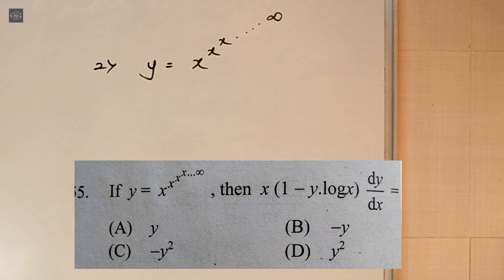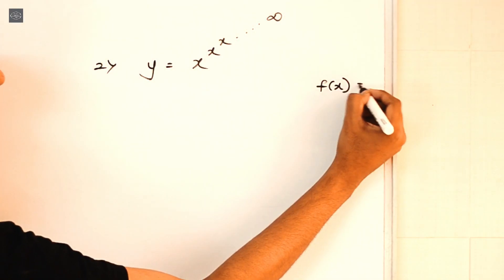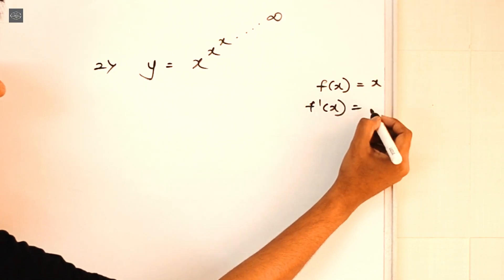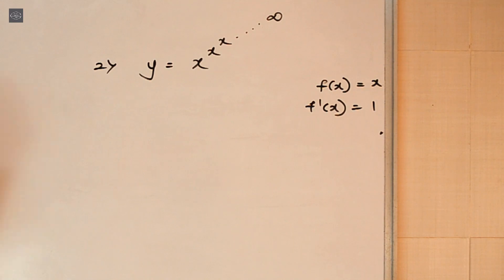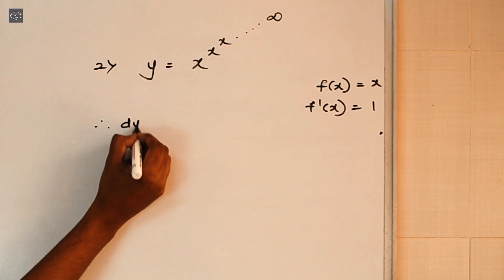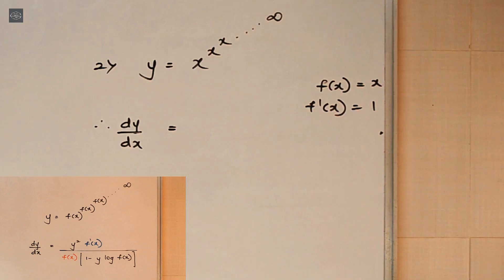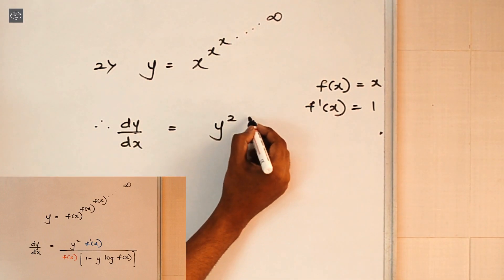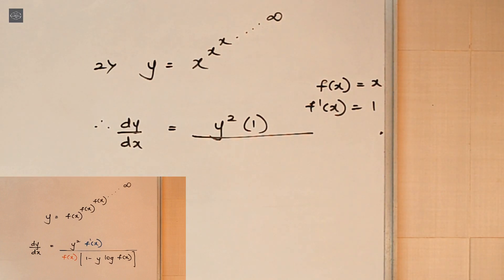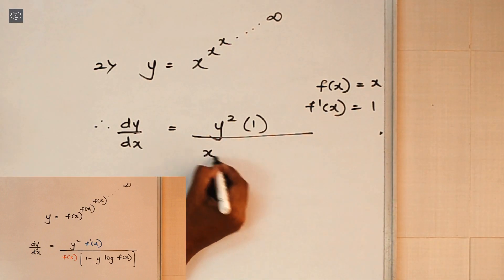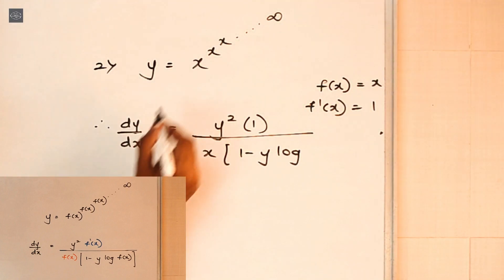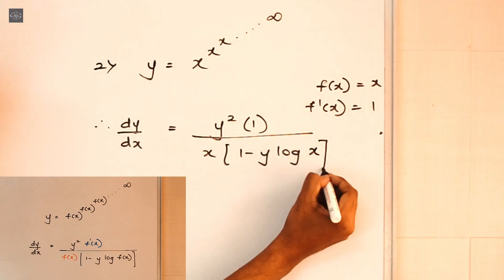Now on the similar line, let's solve the next one. Here the function f(x) is nothing but x, so f'(x) — the derivative of x — is 1. Now applying the shortcut trick: dy/dx equals y squared times f'(x), which is 1, upon the denominator f(x) which is x, times (1 minus y·log f(x)), where f(x) is x.